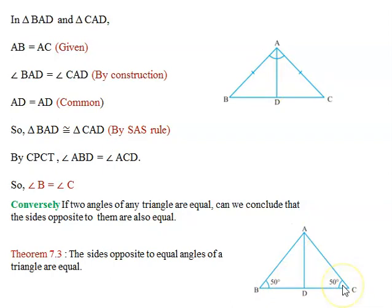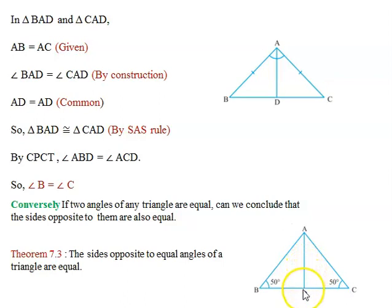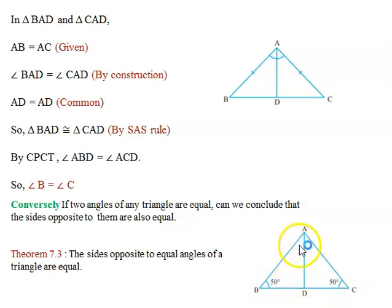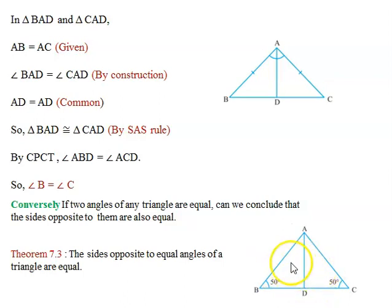Here, angle B and angle C are equal (given), and we need to prove AB equal to AC. Similarly, we draw an angle bisector from point A. The bisected angles are equal, and AD is the common side. Using the AAS rule — two angles and a side — we can say the two triangles are congruent. By CPCT, the other parts are also equal, so obviously AB will be equal to AC.